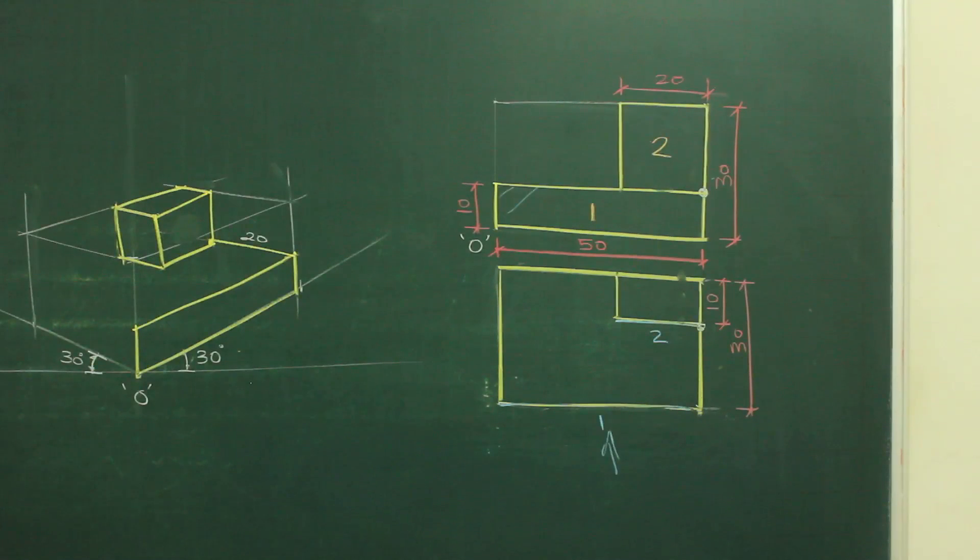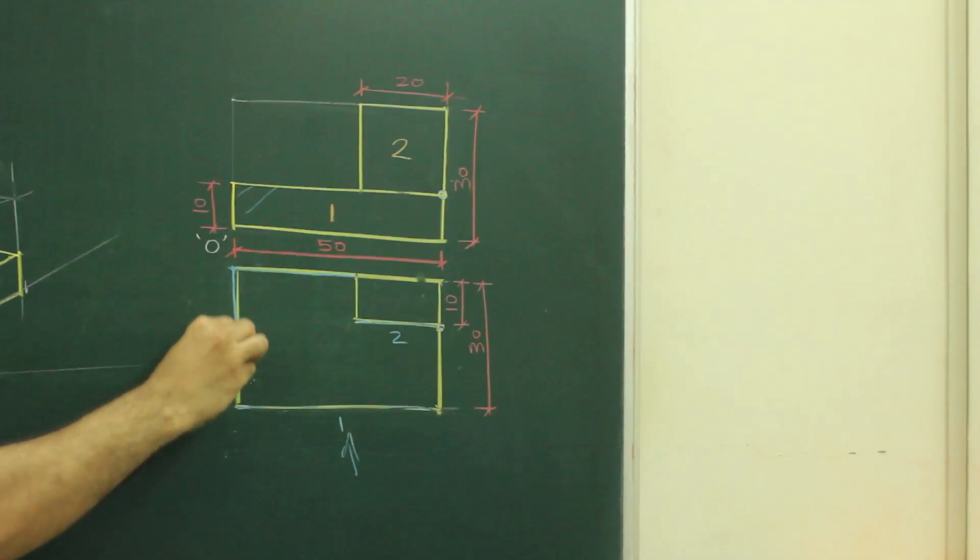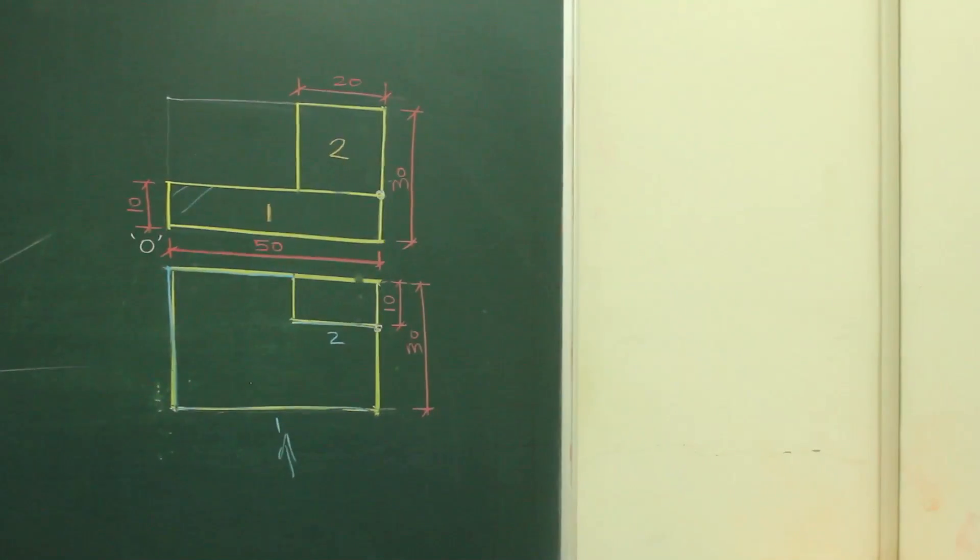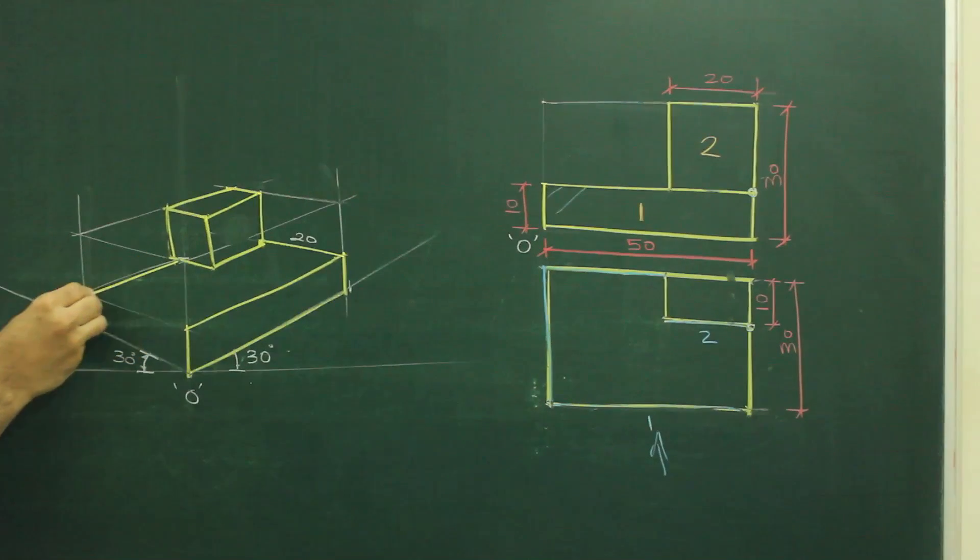And then you have to complete the object. If you see top view, you will come to know this part. So that I can extend from here and here, and then I can dapper it.